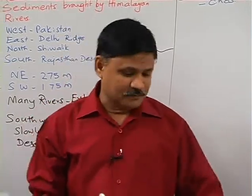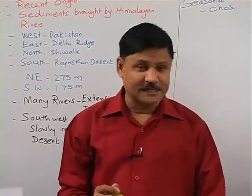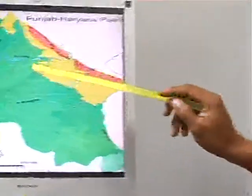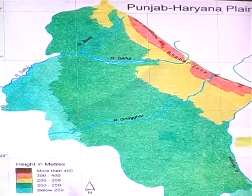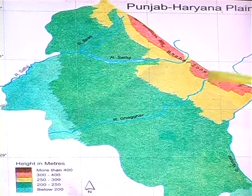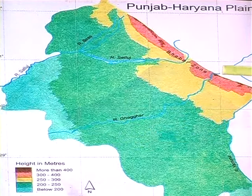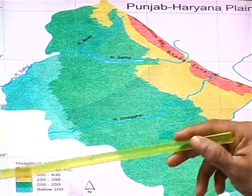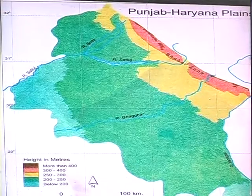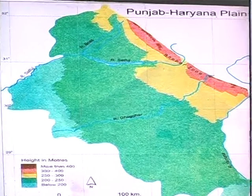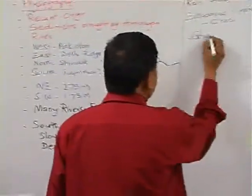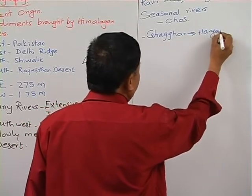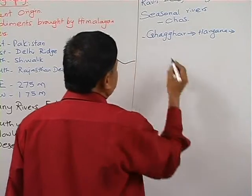The region between river Sutlej and river Yamuna contains the Ghaggar river. It is the only river in Haryana, flowing through Haryana and slowly entering Rajasthan, where it finally disappears into the Rajasthan desert.